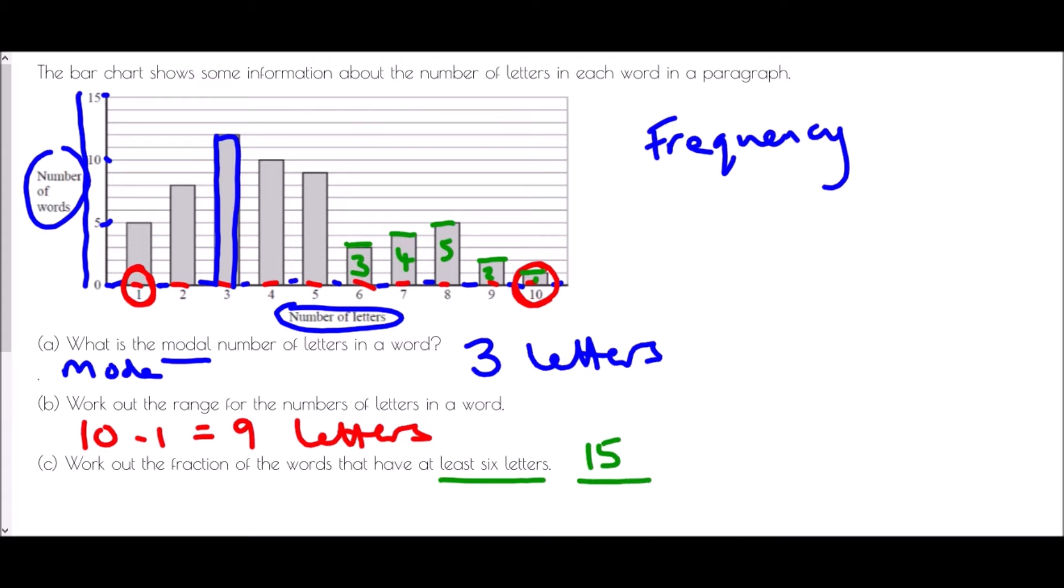But out of how many? Well we would also need to know how many there are in total. So there were five there. There are eight here. There are 12 here, 10 here, and nine here. So now we just need to add all of the numbers together. So five plus eight is 13, plus 12 is 25, plus 10 is 35, plus nine is 44, and the 15 that we had here. So that's 59. And 15 out of 59 is our final answer.